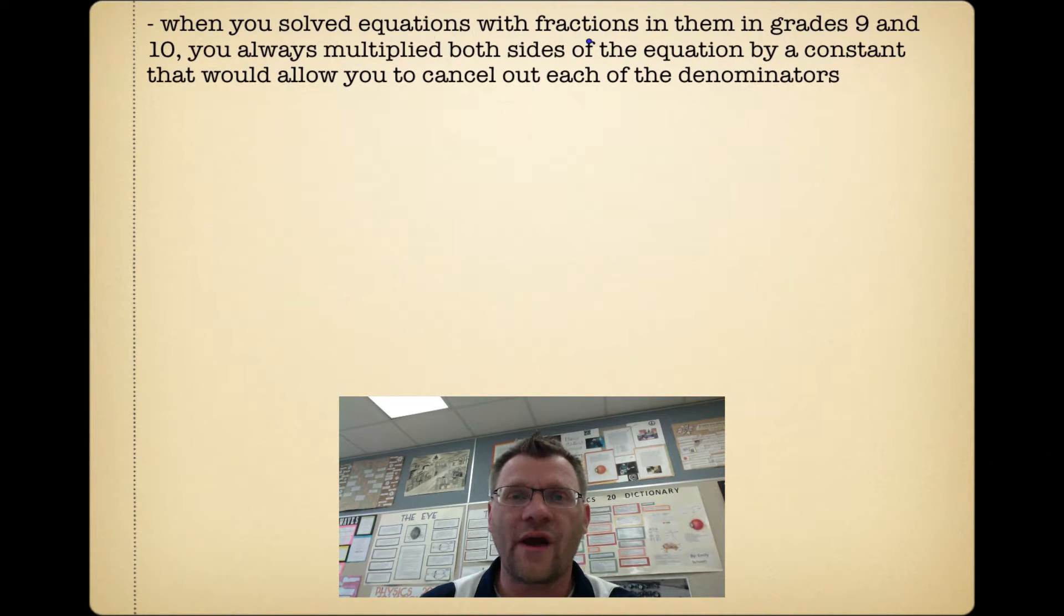So when you solved equations with fractions in grades 9 and 10, we always multiplied both sides of the equation by a constant that would allow you to cancel out each of the denominators. For example, if we had a question like this, 7/8x minus 5/4 equals 1/2x plus 2/3, we would choose a number to multiply each of these terms by that would get rid of all the denominators.